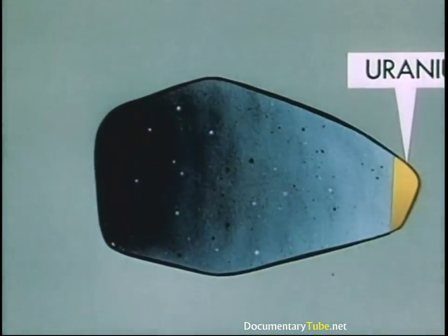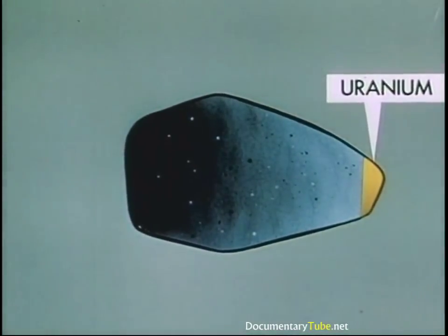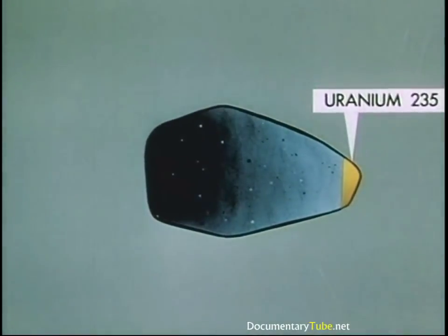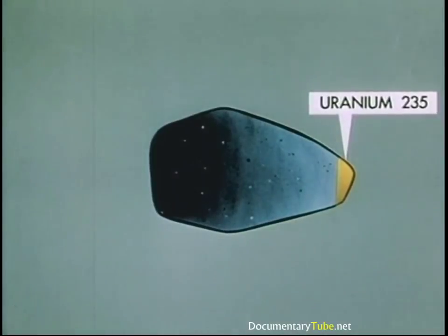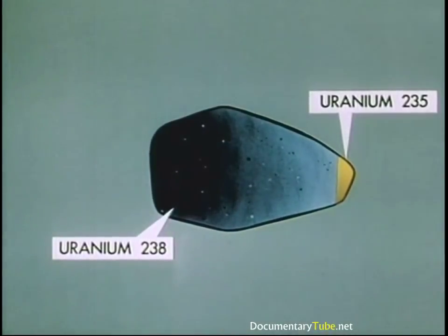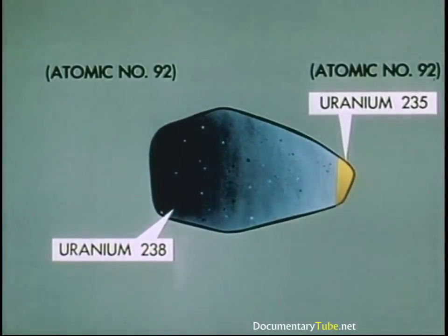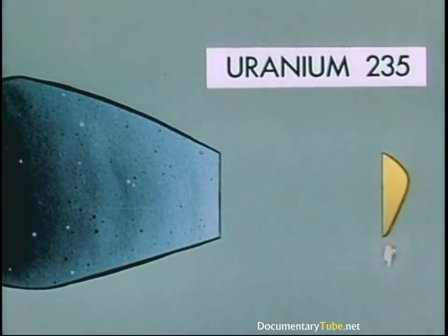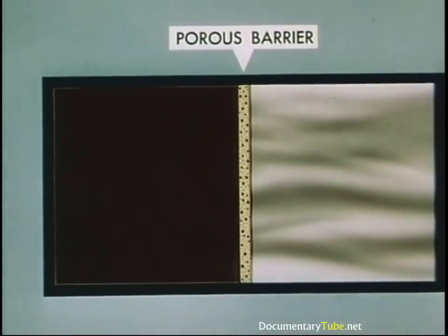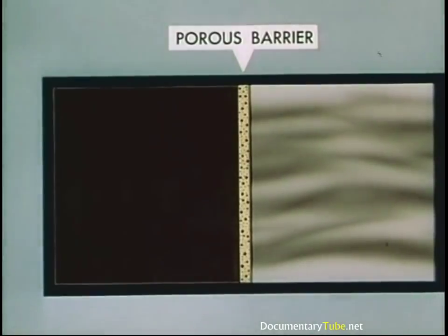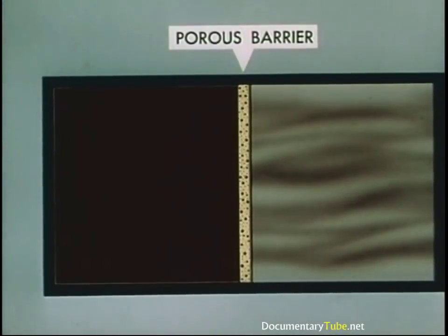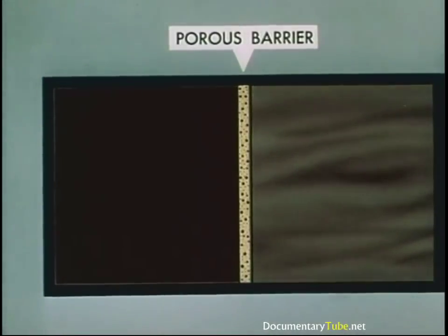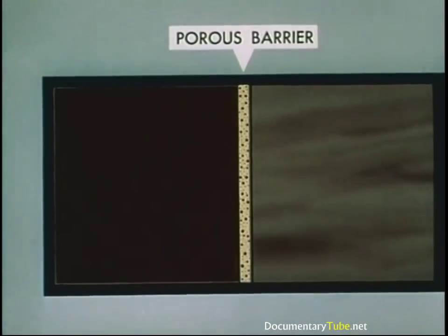They knew that uranium-235 was good fissionable material, but also knew it was scarce. One part in 140 of natural uranium is 235; an insignificant amount is 234, and the rest is 238, which wasn't a suitable ingredient. It was hard to extract the good from the bad, because being isotopes, both had the same atomic number of 92 and therefore the same chemical behavior. The very slight difference in atomic weights, however, made possible several ways of achieving separation by physical means. If natural uranium gas is passed along one side of a porous barrier with a greater vacuum on the other, the lighter 235 atoms will go through the barrier a bit faster than the 238, making it possible to enrich the uranium with the 235 isotope enough for fission purposes.